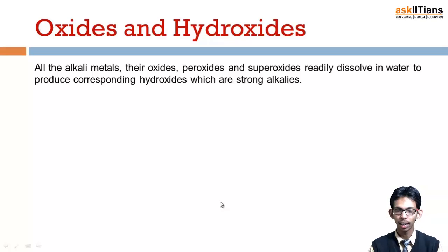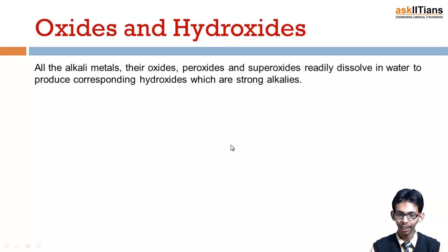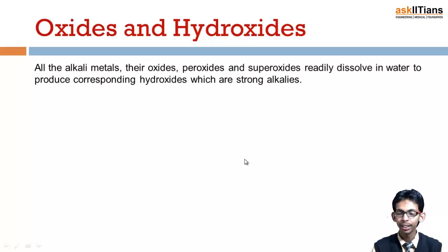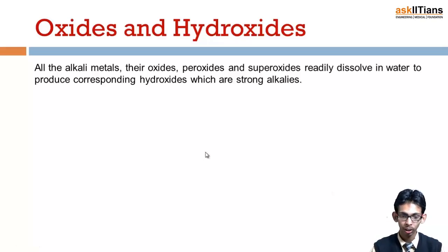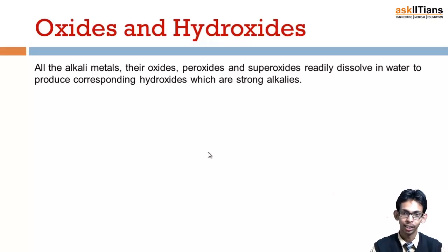All the alkali metals, and their oxides, peroxides, and superoxides, readily dissolve in water. They are all soluble in water and they produce corresponding hydroxides, which are strongly alkaline. Alkaline means those bases which are soluble in water. So oxides, peroxides, and superoxides of alkali metals dissolve in water and result in the formation of alkaline hydroxides.